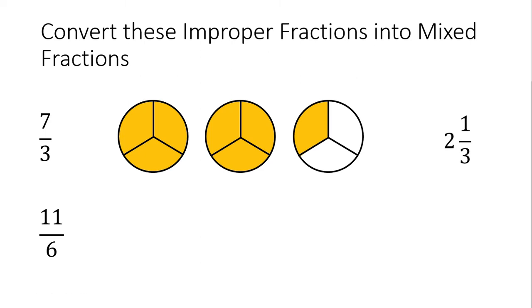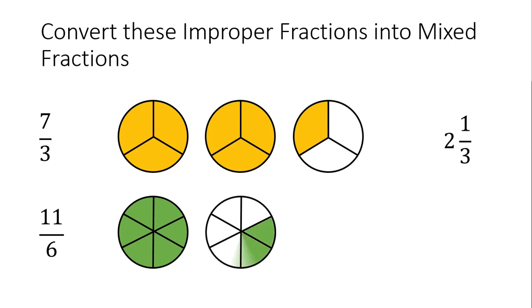Bottom question: 11/6ths. We keep coloring in sixths until we get to 11. Our circle is divided into 6 equal parts. Coloring in: 1, 2, 3, 4, 5, 6 — then 7, 8, 9, 10, 11. Now convert: how many whole circles do we have? One whole circle is colored in. And then how many parts? One, two, three, four, five — five out of six colored in. So, 1 and 5/6ths. And that's how you convert improper fractions into mixed fractions.